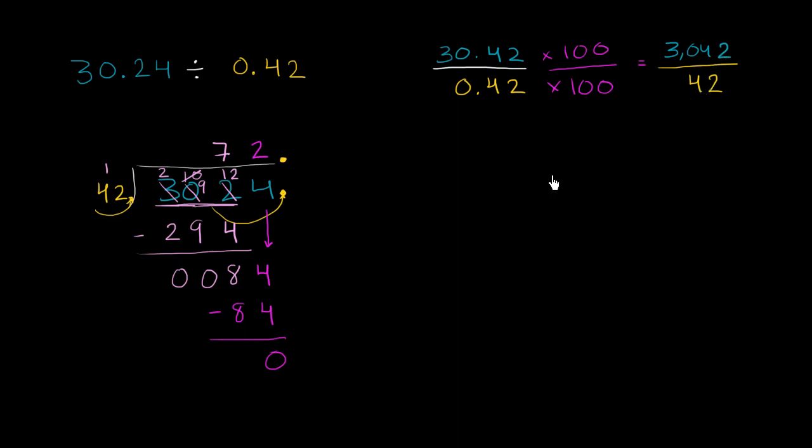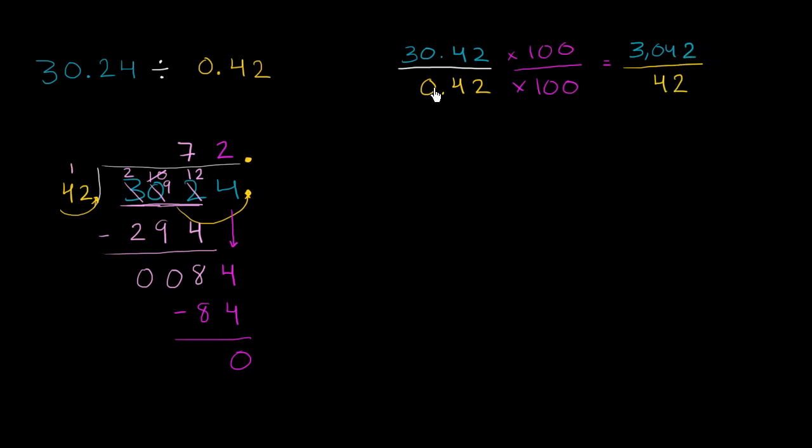So 3042 divided by 42 is the same thing as 30.42 divided by 0.42. And it's going to be equal to 72. This is equal to 72.